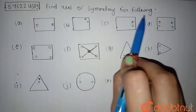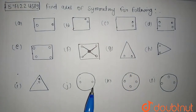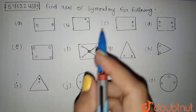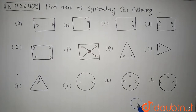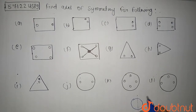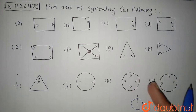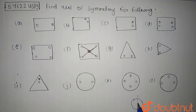Hello students. The question is we have to find the axis of symmetry for the following figures. What I mean by axis of symmetry is: you divide a figure around one axis, and rotating the figure around that axis you will get the same figure. Simply put, if you cut from that line you will get two equal parts.